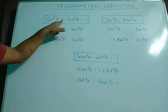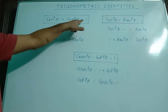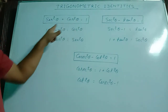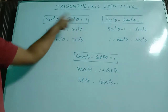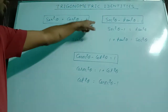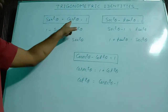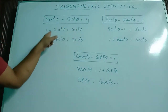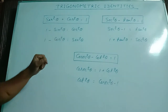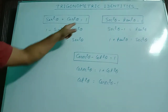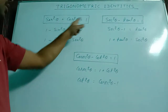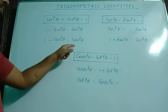Since sin square theta plus cos square theta equal to 1, therefore, following the rule of transposition, 1 minus sin square theta equal to cos square theta. Similarly, 1 minus cos square theta equal to sin square theta.